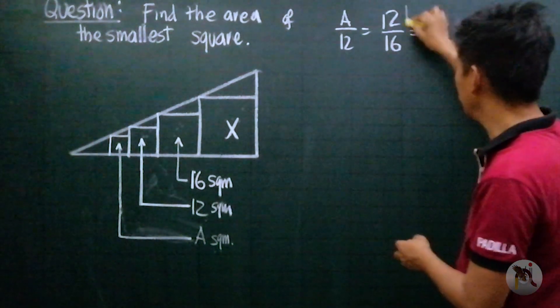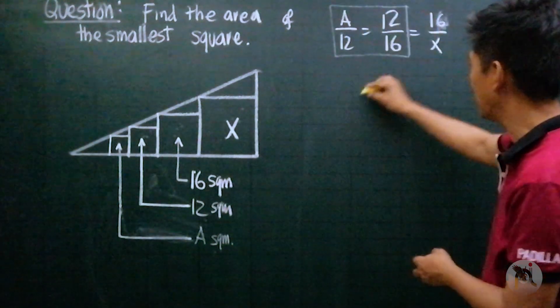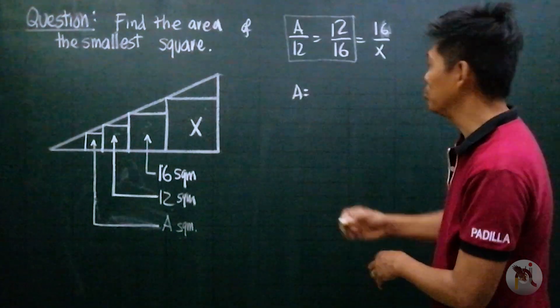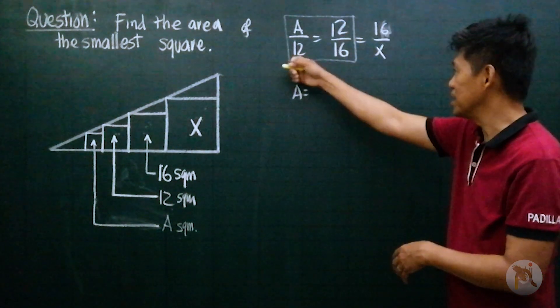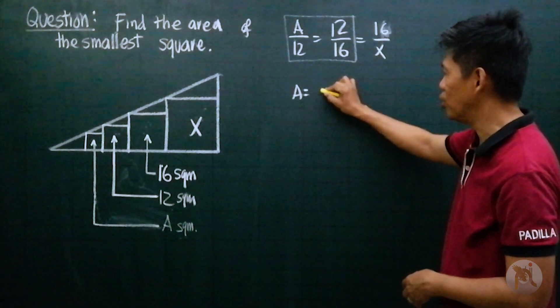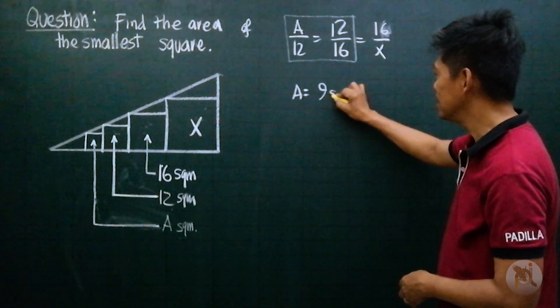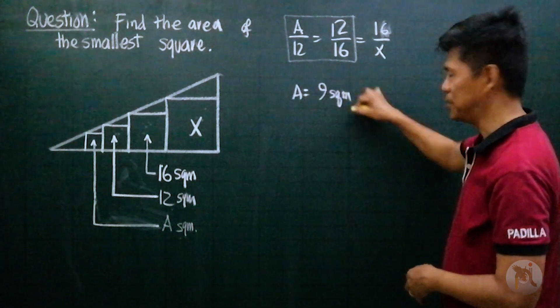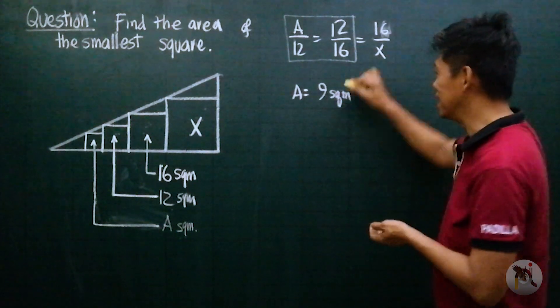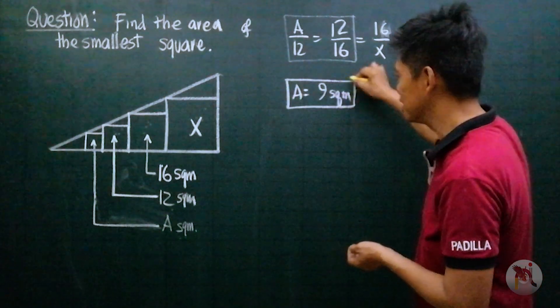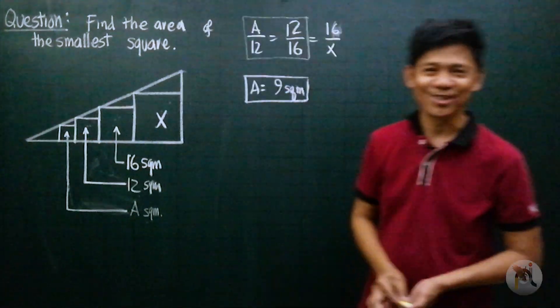So solving this equation, we therefore have A is going to be equal to 12 over 16 times 12. A is going to be 9 square meters. You follow? So this is the area of the small square. So until next time.